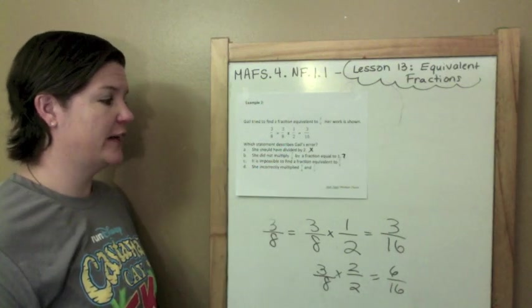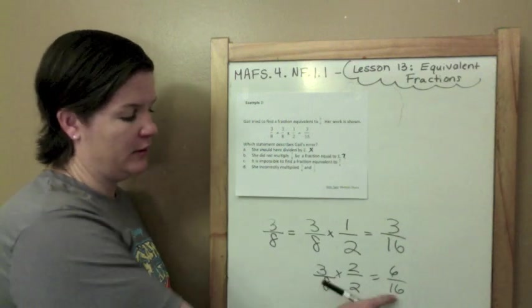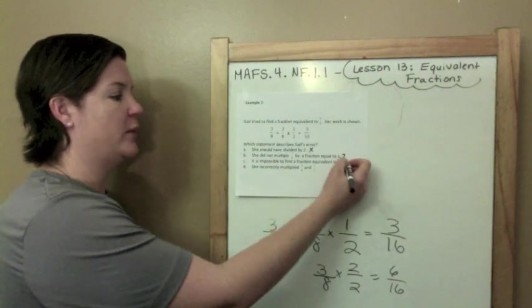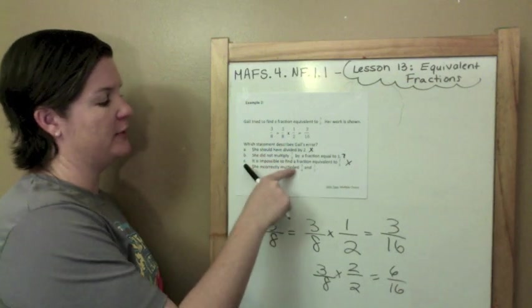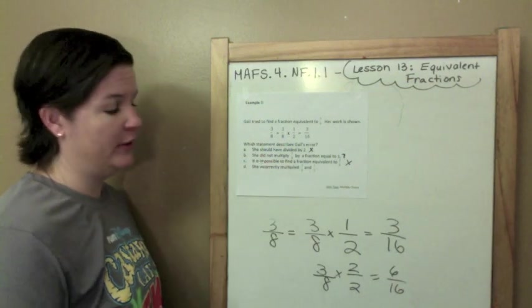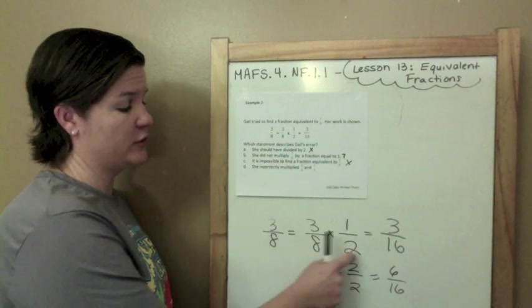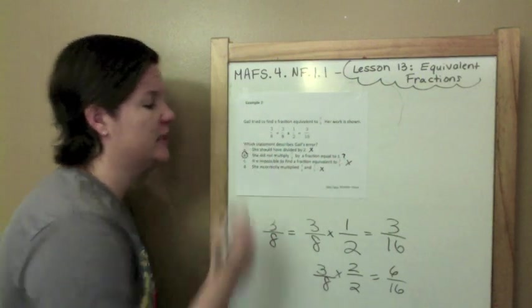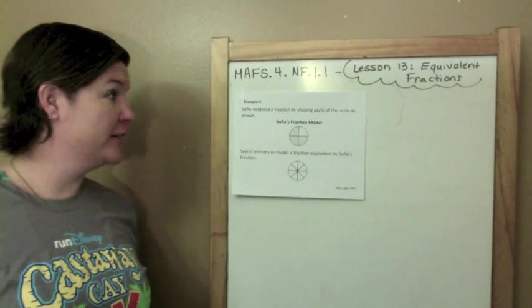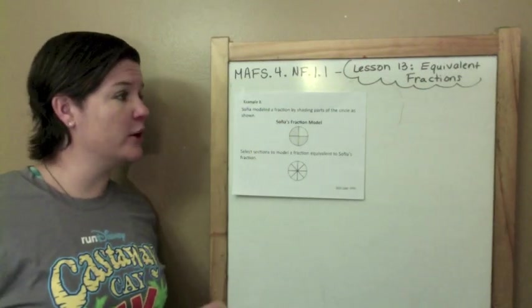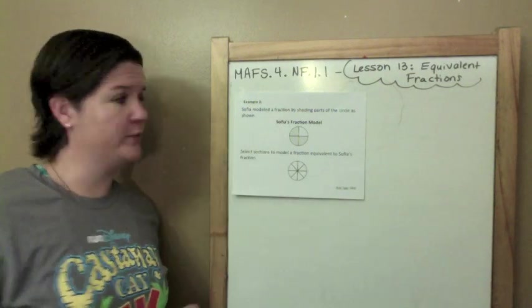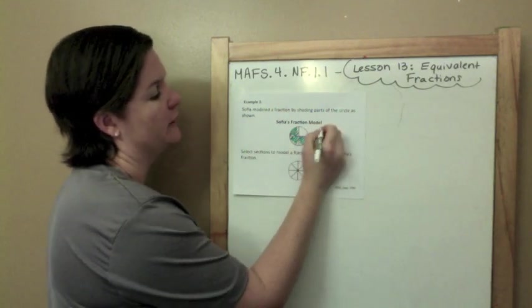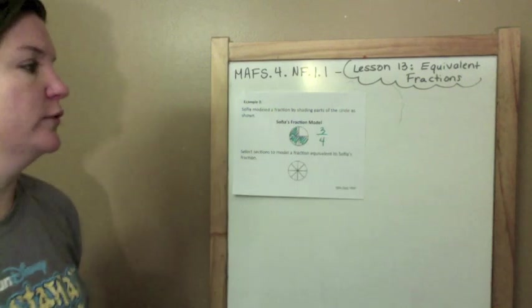It is impossible to find a fraction equivalent to 3 eighths. It was not impossible. We found it. It was possible, 6 sixteenths. We can eliminate that one. She incorrectly multiplied 3 eighths and 1 half. 3 times 1 is 3, 8 times 2 is 16. No, she multiplied correctly. So that is not a correct answer. So B is our answer. Sophia modeled a fraction by shading parts of the circle as shown. Here is Sophia's model. She has shaded in, if you can't tell, she shaded in 3, 1, 2, 3 out of 4 total. 3 fourths.